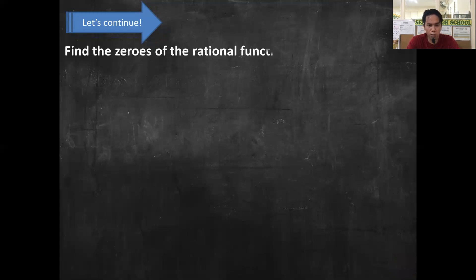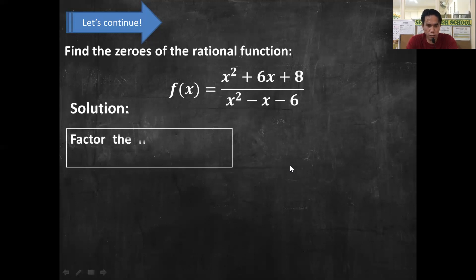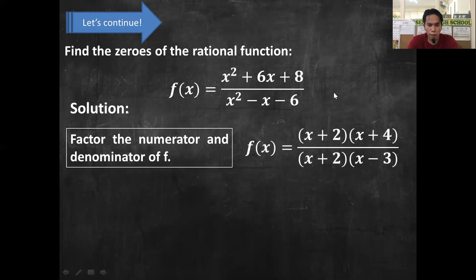Find the zeros of the rational function f(x) = (x² + 6x + 8) / (x² − x − 6). So let's have the solution. We will do this step-by-step process. First, we are going to factor the numerator and the denominator of f. So the factor of x² + 6x + 8 — we will have this.